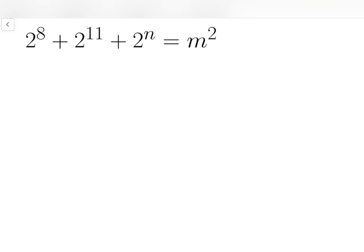Noticing that 2 to the power of 8 equals 256, while 2 to the power of 11 is equal to 2048. And if you add them up, the sum is 2304. It is actually 48 squared.